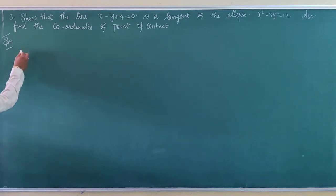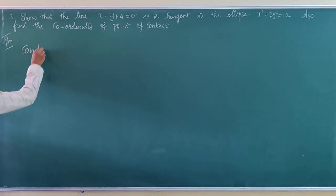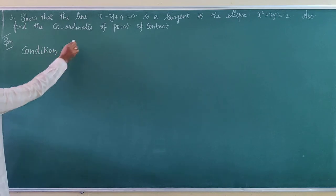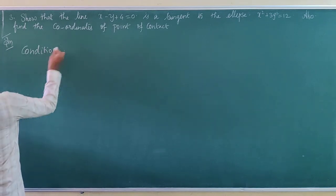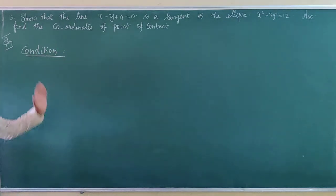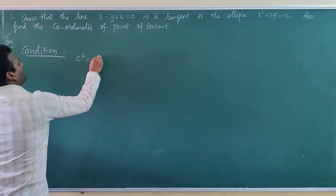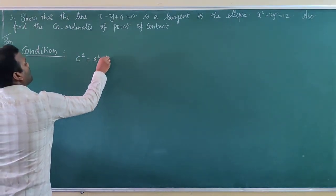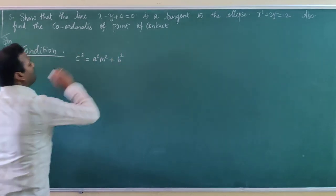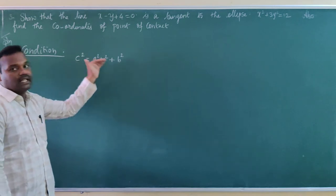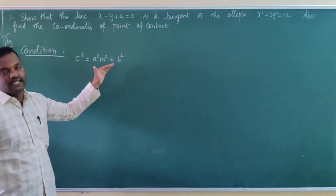So first we are going to state the condition. The condition for the line y equal to mx plus c to be a tangent to the ellipse is: c squared is equal to a squared m squared plus b squared. This is the condition, and we are going to substitute all the values into it.